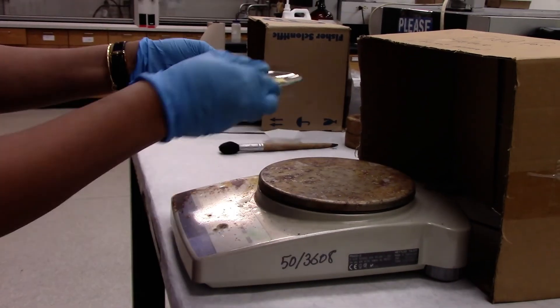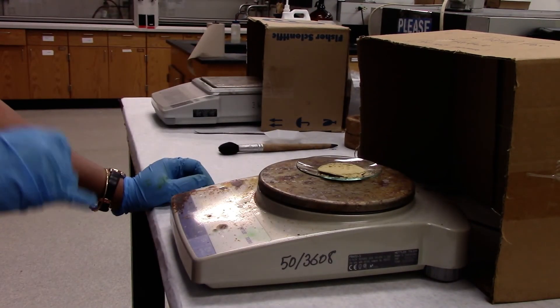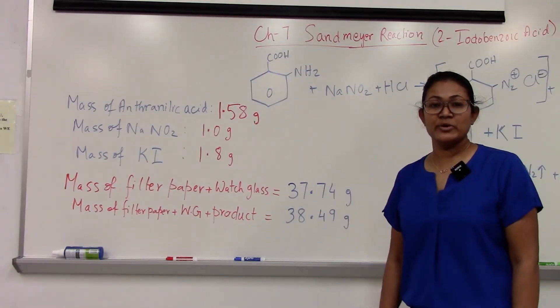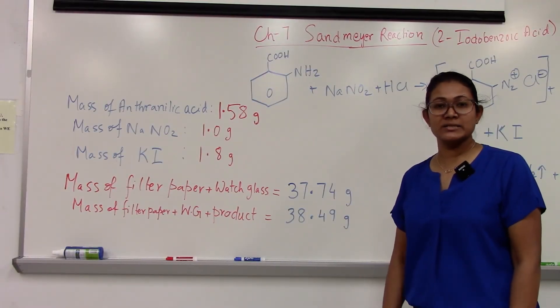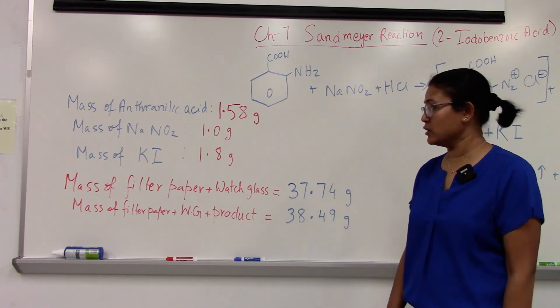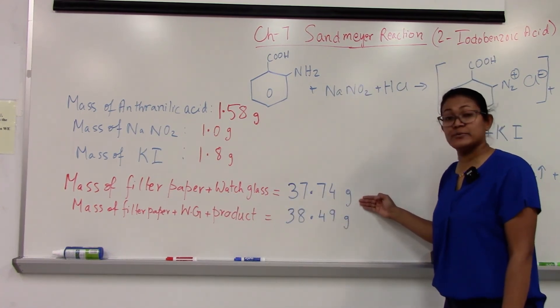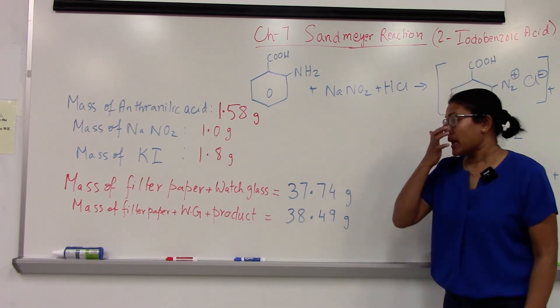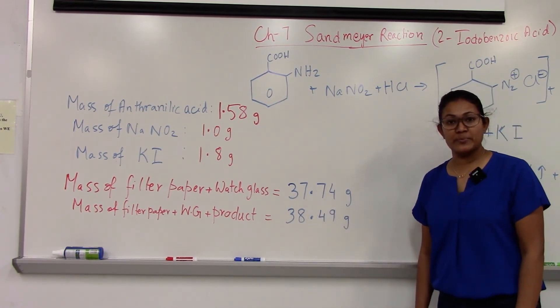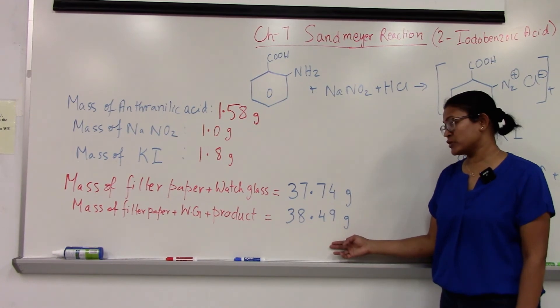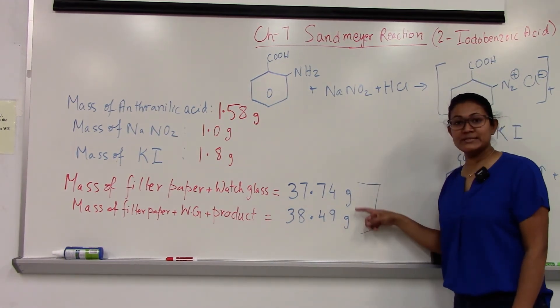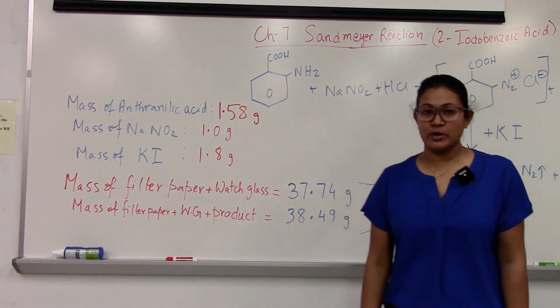Tare the balance and record the mass. At the end of the reaction we crystallized our product and filtered it out. The mass of the filter paper with watch glass was 37.74 grams. And mass of the product with the filter paper and watch glass was 38.49 grams. So the difference between these two numbers will get you the mass of the product. Find the limiting reactant and percent yield.